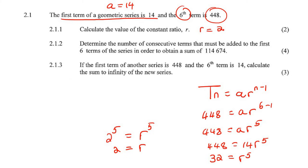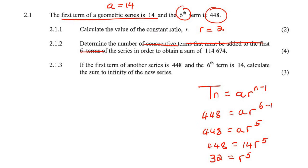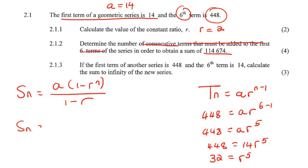This next question is just worded in a weird way, but it's actually very easy. It says: determine the number of consecutive terms that must be added to the first six terms of the series in order to obtain a sum of 114674. Because there's a sum involved, we use one of the two S_n formulas — you can choose whichever you like, either putting the r's first or the ones first.